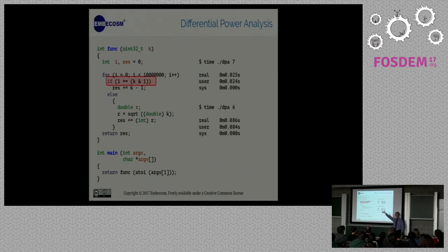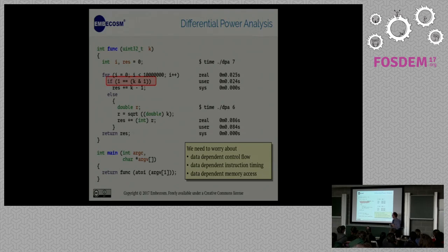A technique that's very popular was made popular about 10 years ago by Simon Moore and his team at Cambridge University is differential power analysis. So power analysis is about looking at how much energy a computer uses. Differential power analysis is about looking at how that changes in different circumstances. Here is a very simple algorithm I've got which takes my key and if it's an odd key it subtracts one from it and if it's an even key it takes the square root of the key. Clearly one of those is an easy operation and the other is an expensive operation.